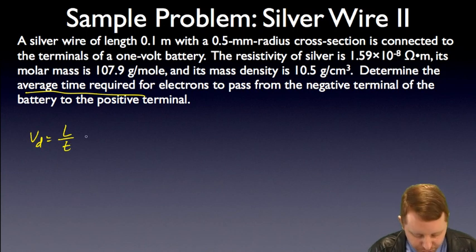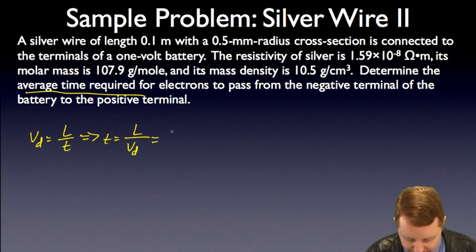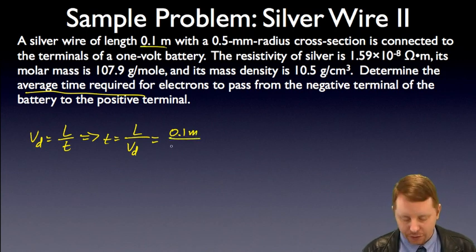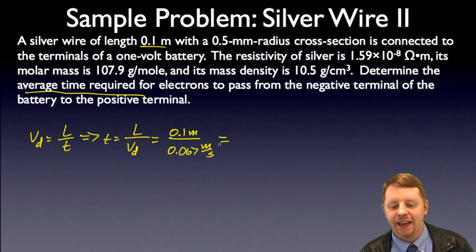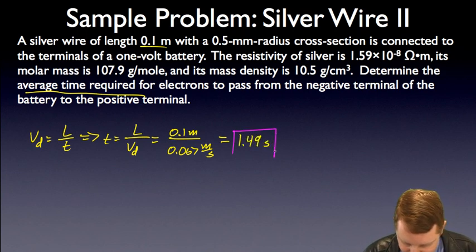And if we want the time then, time is going to be the length that it travels divided by the average velocity. Our length is 10 centimeters, 0.1 meter. And our drift velocity we just found as 0.067 meters per second. So how long does it take on average for an electron to go from the negative terminal to the positive terminal? About 1.49 or 1.5 seconds.